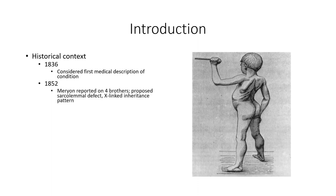About 15 years later, the English physician Edward Morian published an account of eight boys from three families that all demonstrated progressive muscle wasting, leading to loss of ambulation and early death. He detailed the histological changes to the muscle tissue and made the observation that the condition was exclusively found in males. This is considered the first known documentation of Duchenne muscular dystrophy.